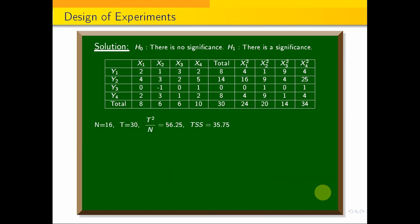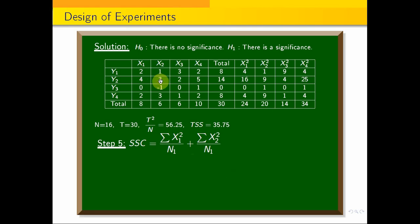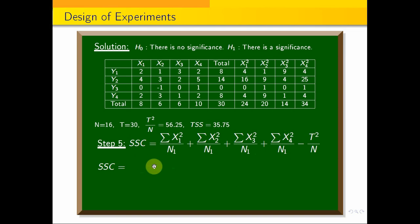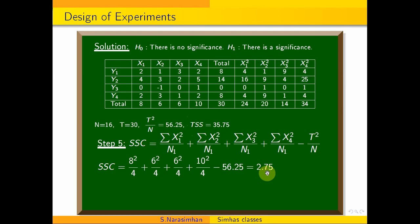From this data, we compute sum of squares of columns (SSC), sum of squares of rows (SSR), and sum of squares of treatment. SSC equals: (8 squared by 4) plus (6 squared by 4) plus (6 squared by 4) plus (10 squared by 4), minus T squared by n (56.25). Simplifying, we get SSC equals 2.75.